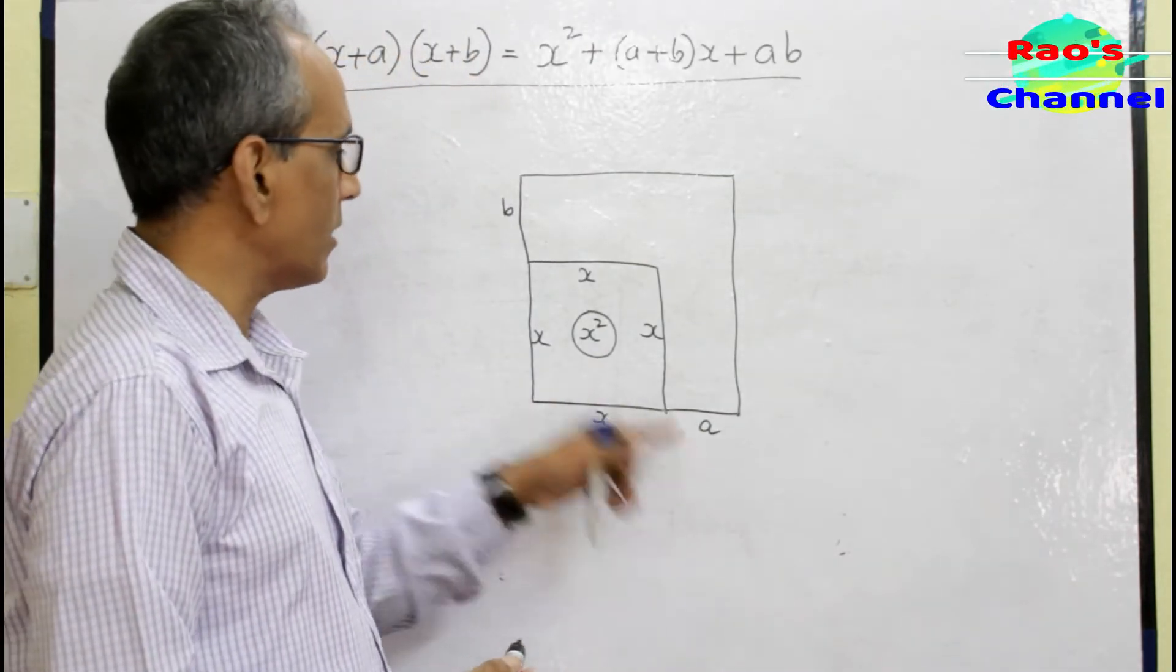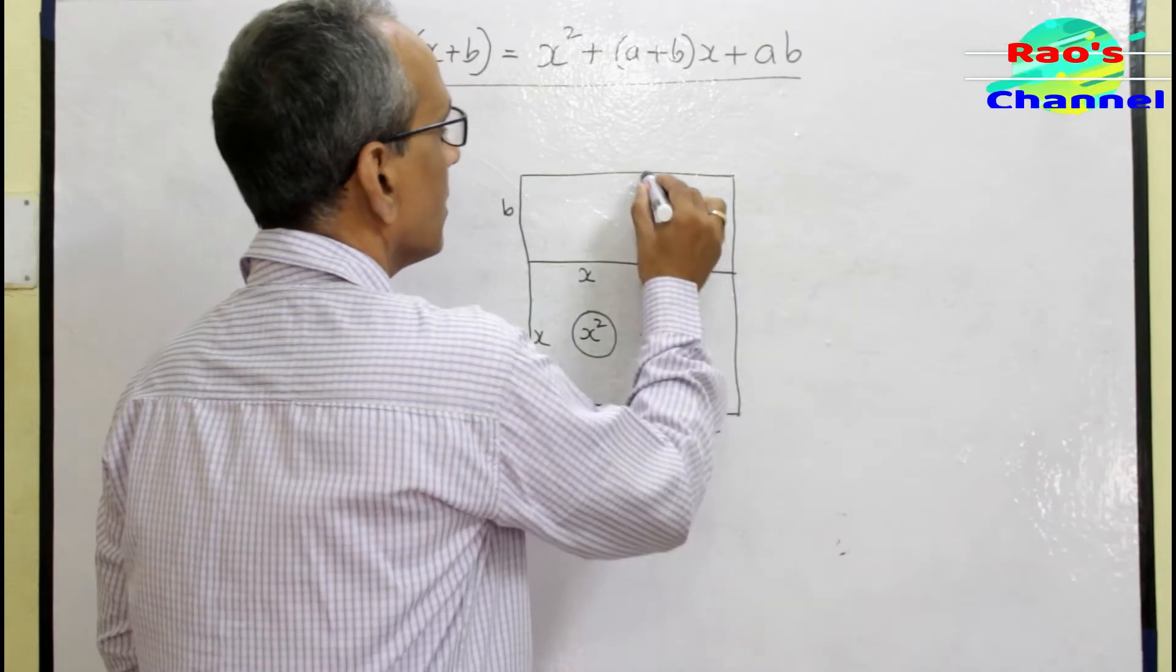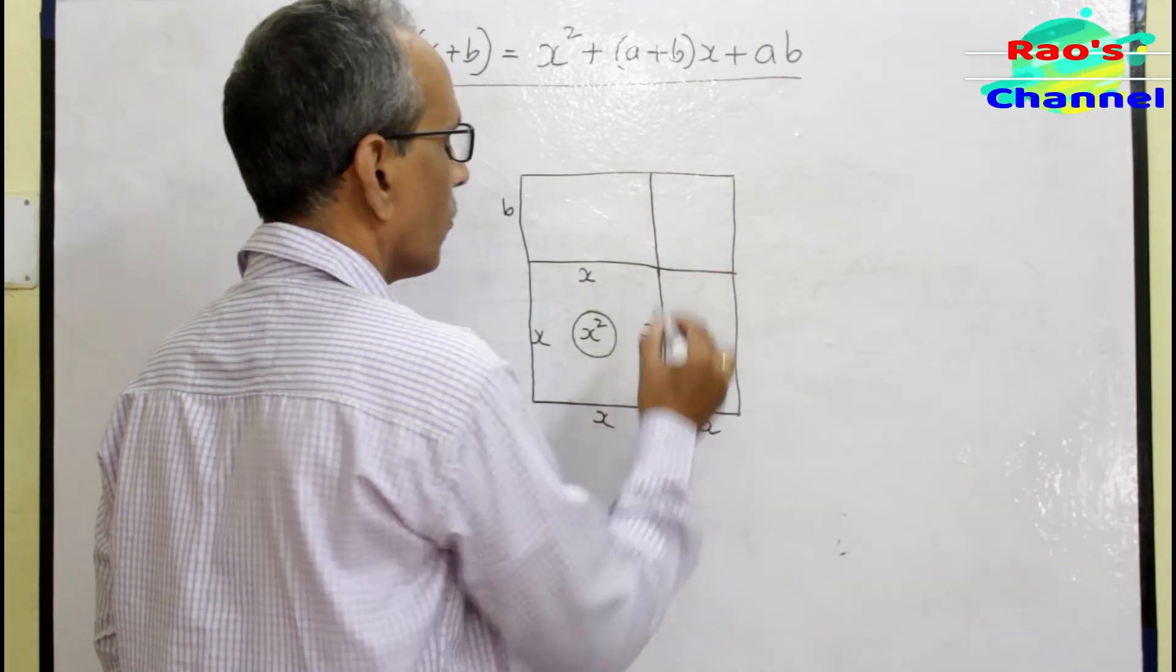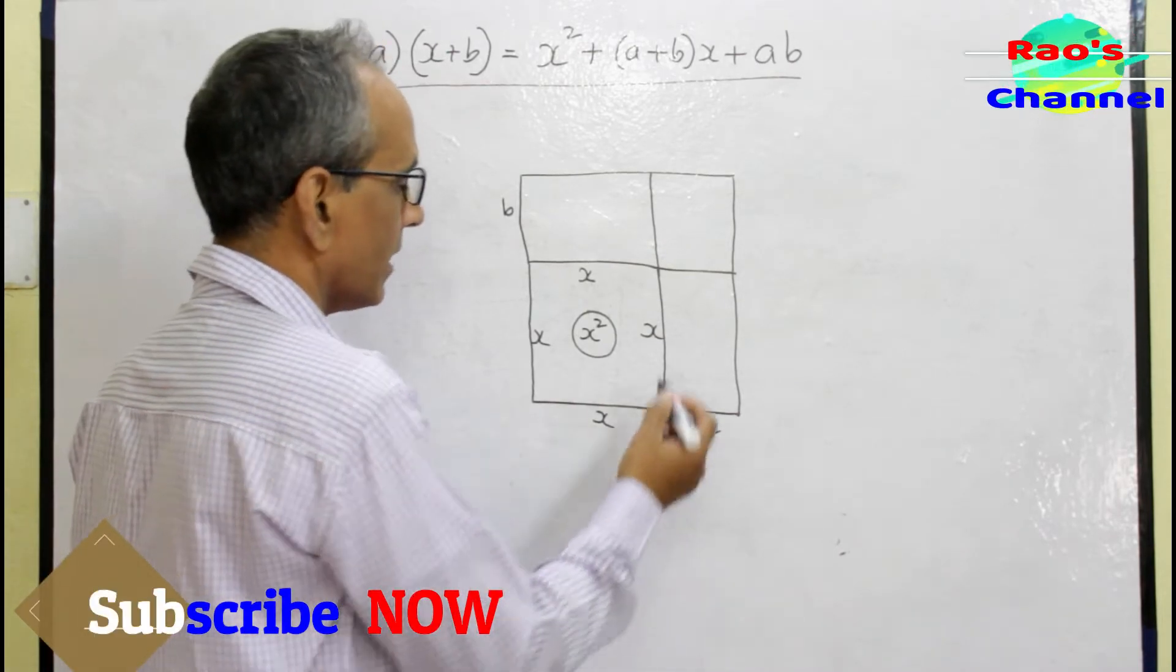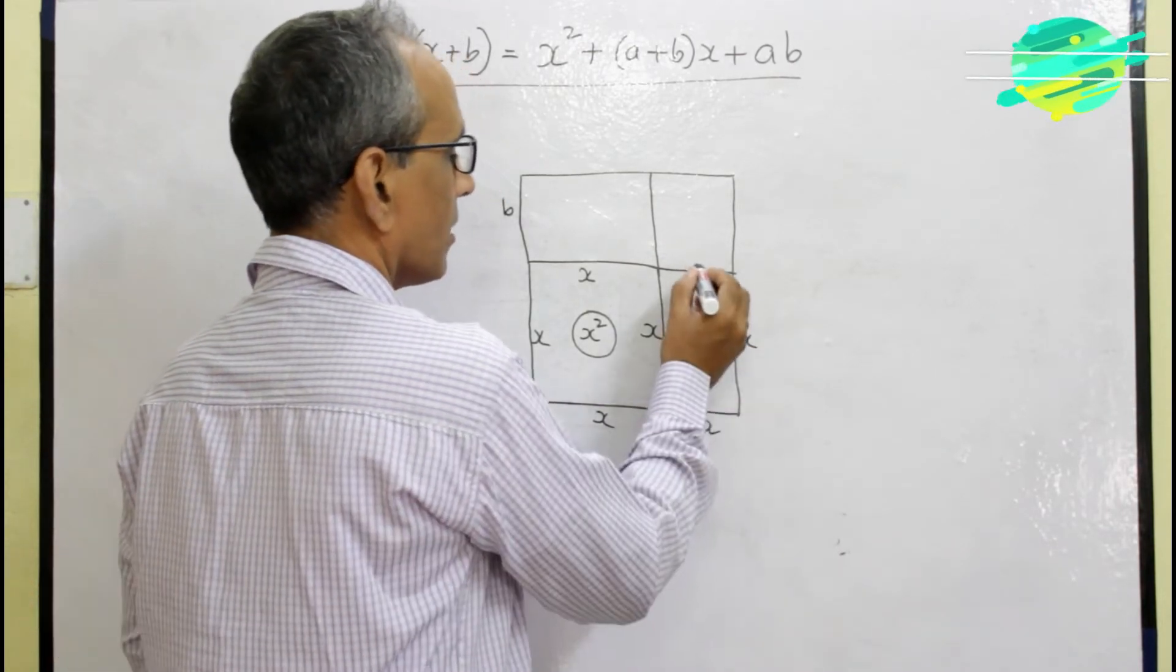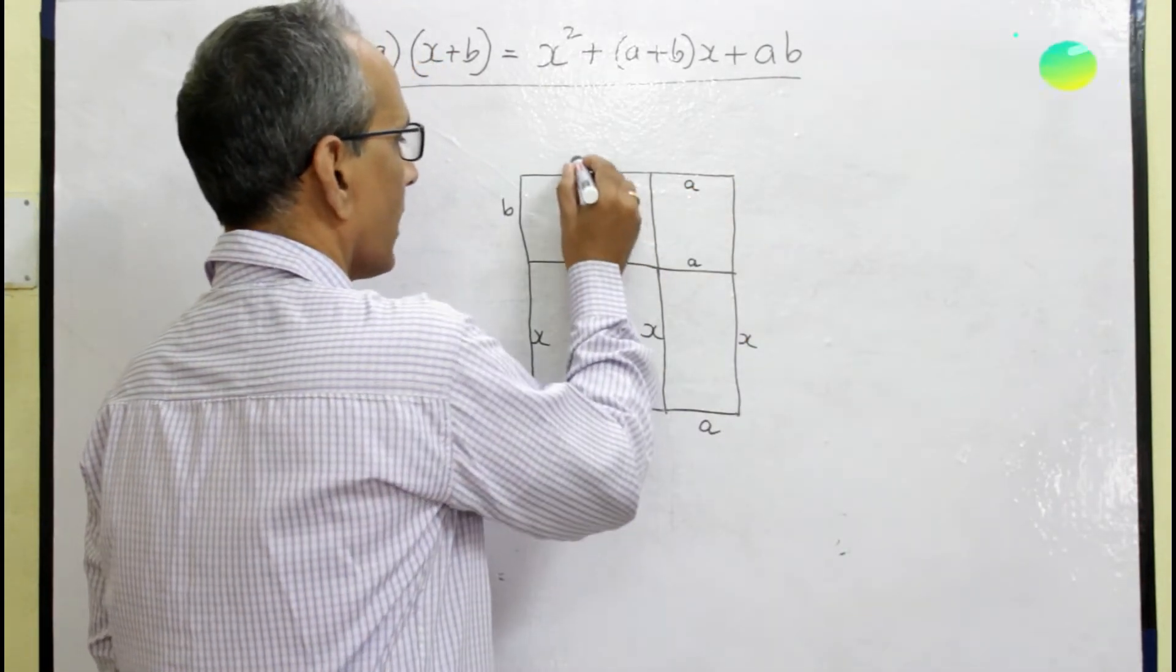Let me complete the whole figure. Here also we have four regions. Let me mark the measurements along the sides. This is also x, opposite sides all are a units, and opposite sides all are x units.